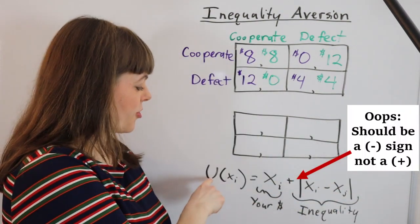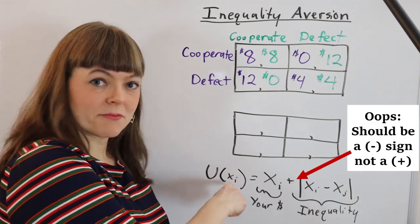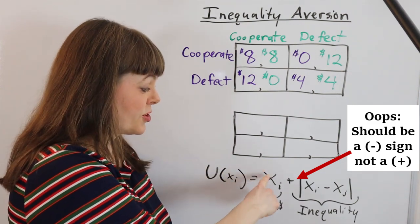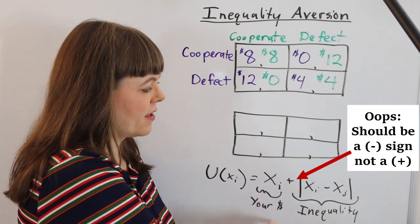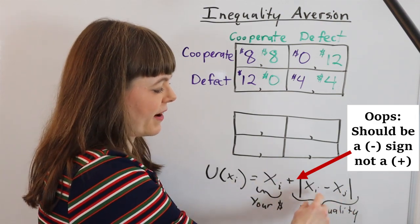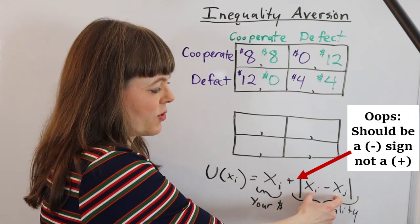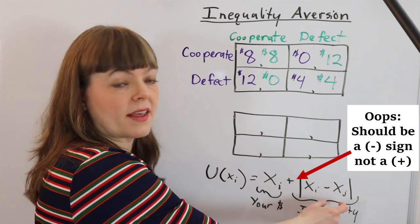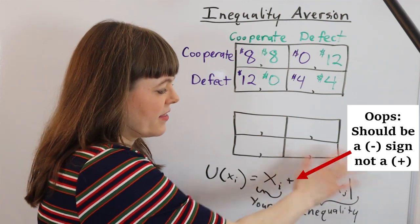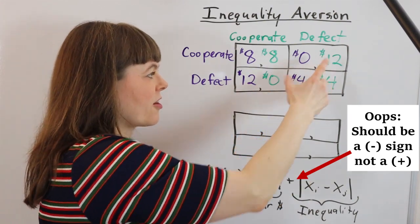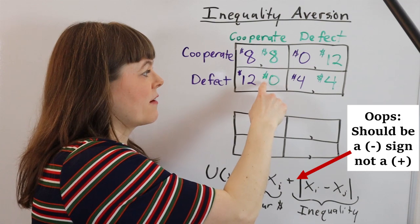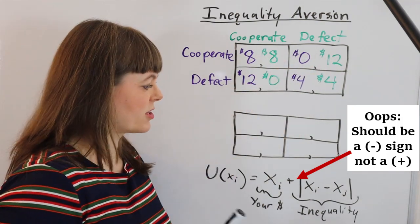In this situation, your utility for the amount of money you end up with is equal to your classic utility over the amount of money you end up with, but also this inequality factor, which is the difference between your money and the other person's money. The way I've set up this equation, it doesn't matter whether you're here or you're here, you're going to get a disutility of negative 12 in both situations.